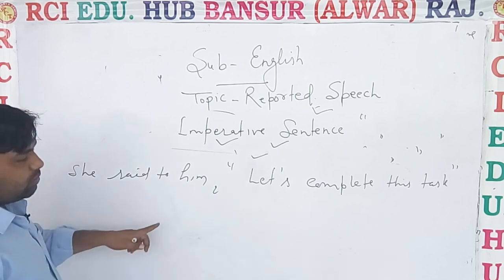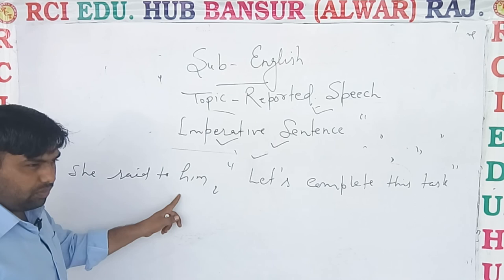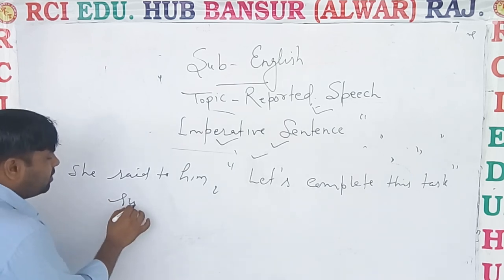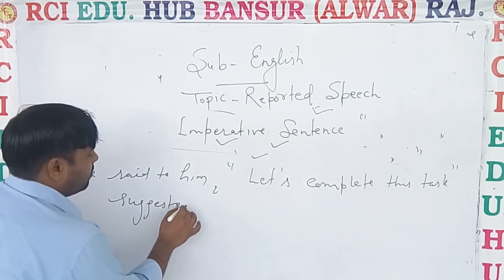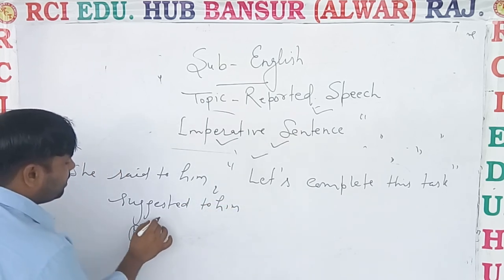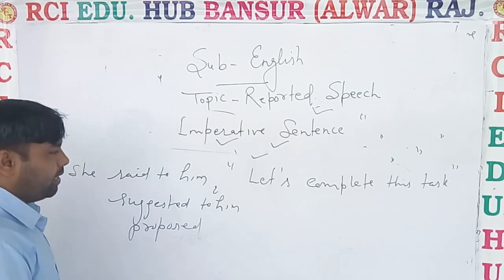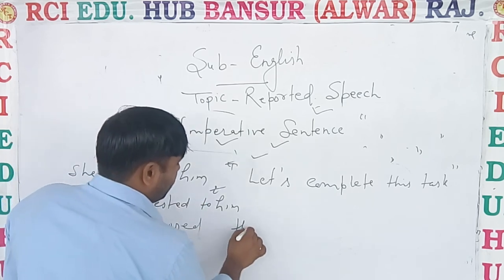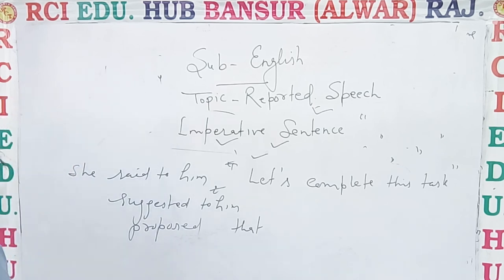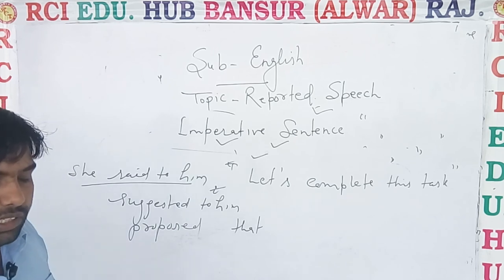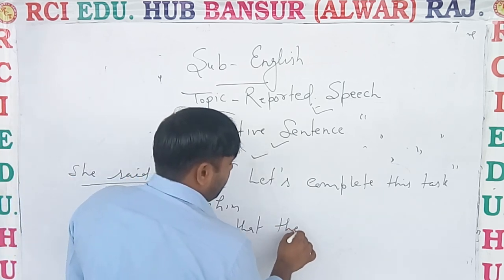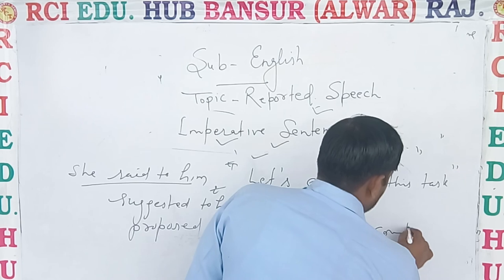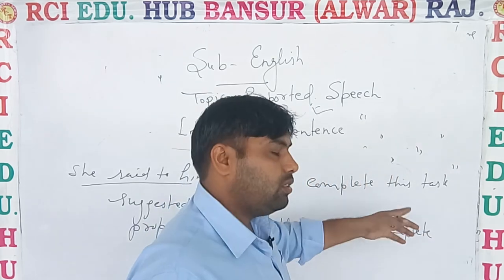He suggested to him, or he proposed him. With 'suggested', we use 'to'; with 'proposed', there is no need to use 'to'. So: 'He suggested to him to complete this task.' To remove commas, we use 'that'. Since the first person is not there outside, we use 'they'. 'Now' changes into 'then', and 'this' changes into 'that'.